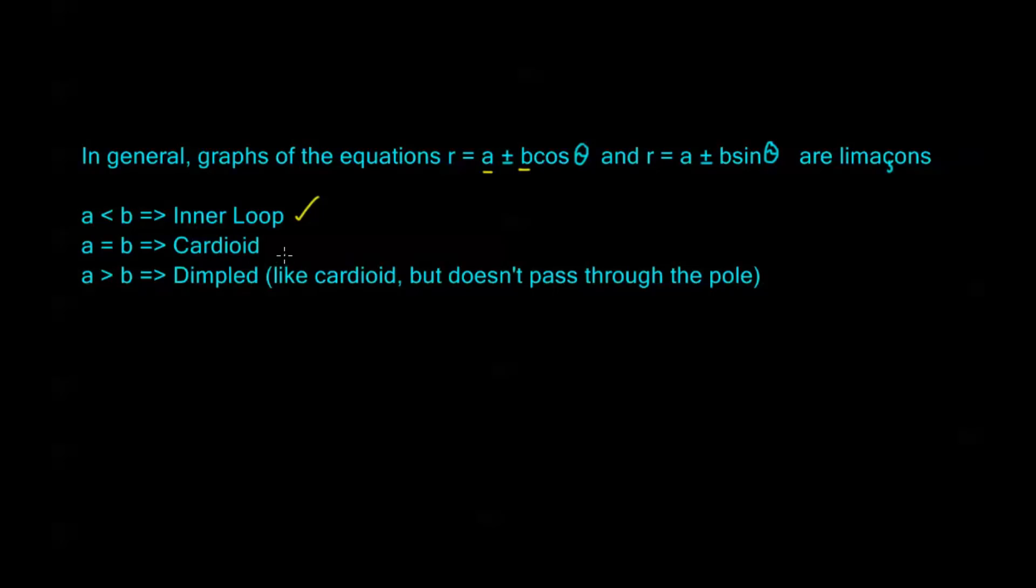Now earlier we had an a equal to b, didn't we? We had a 2 plus, I think it was 2 + 2sin(θ). When a = b, we're going to dimple in and we're going to touch the origin or pole exactly one time and that's called a cardioid. Remember it looks like a heart.